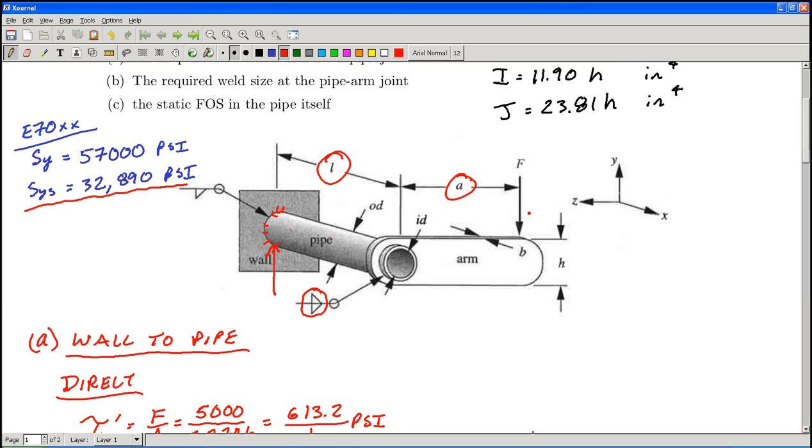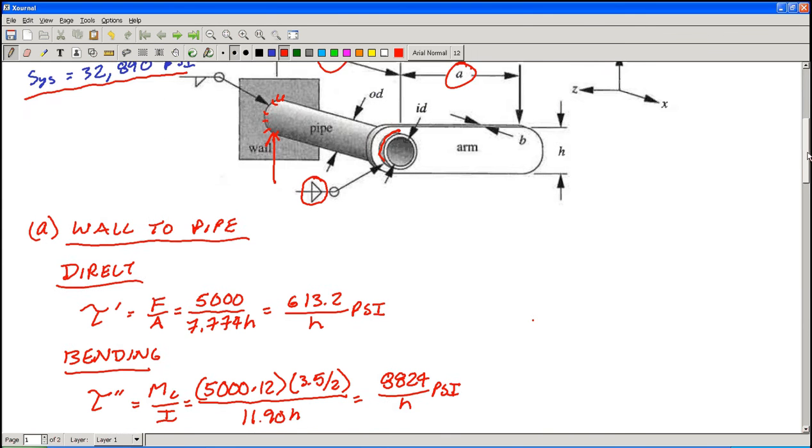If you think about that, if the fit between the pipe and the arm were really close, then that shear force could transfer mechanically between the two components. In other words, the weld doesn't necessarily have to transfer that shear force. Now if the fit is pretty loose, then chances are the weld is going to end up carrying some of that. So I'm just going to include it in the weld analysis to be essentially conservative.